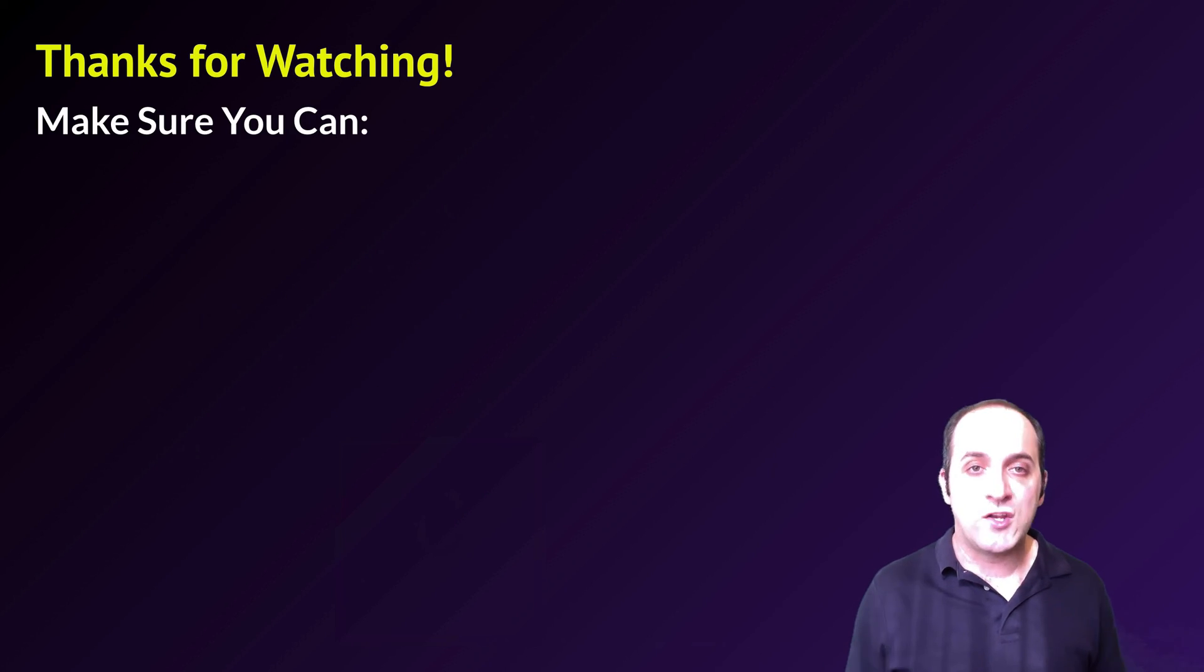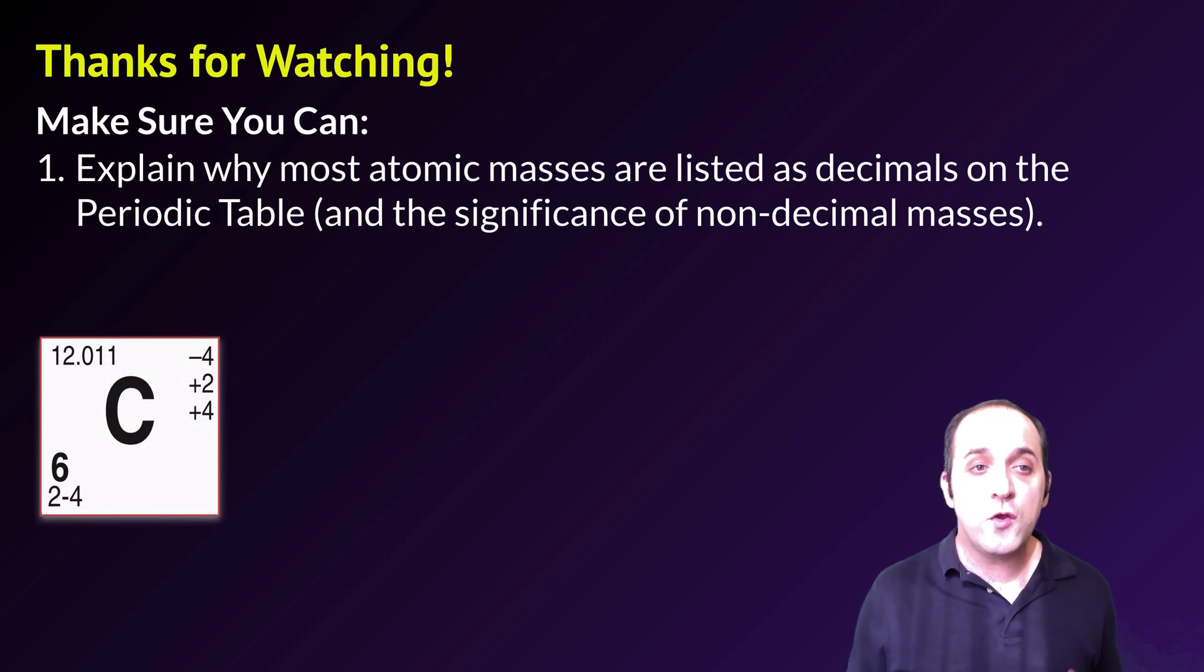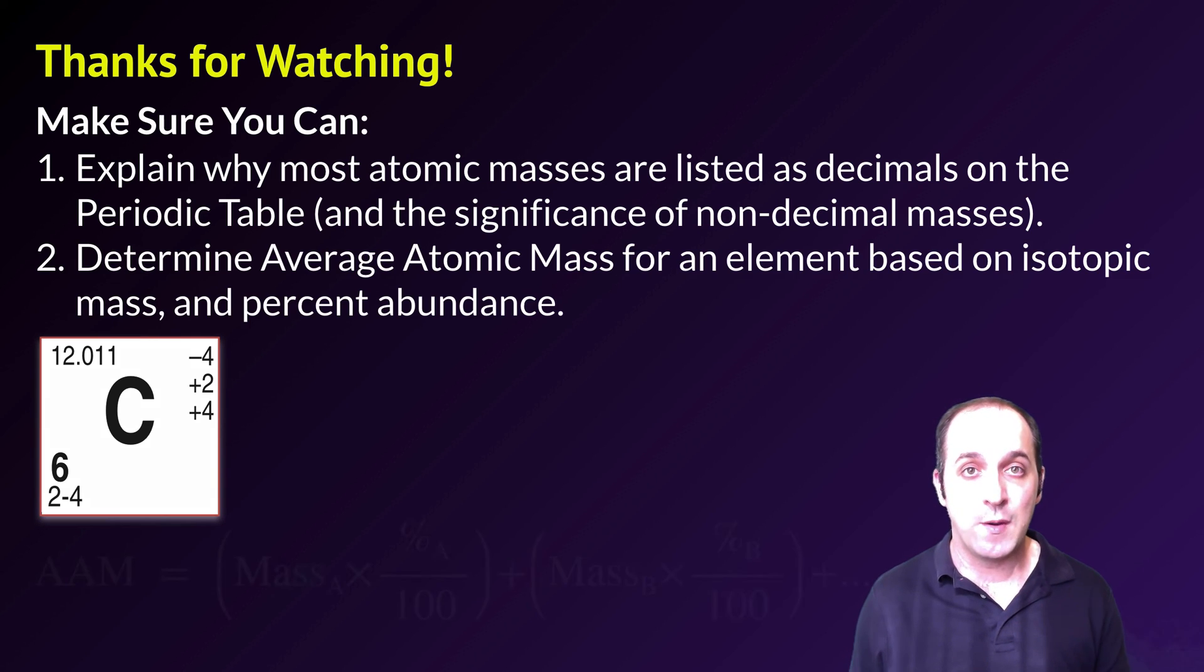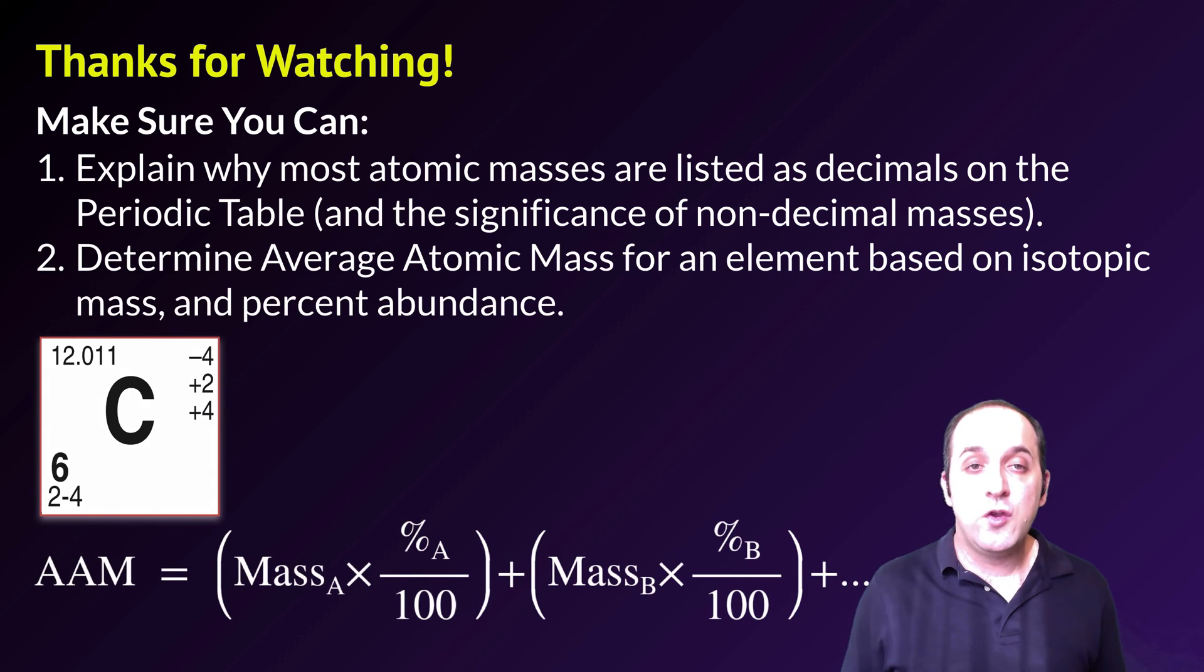Thanks so much for watching this video on average atomic mass. Make sure that you can do the following things here at the end. Make sure that you can explain why most atomic masses on the periodic table are listed as decimals and the significance of the non-decimal masses that we see on the periodic table. Also make sure that you can determine average atomic mass for an element based on isotopic mass and its percent abundance.